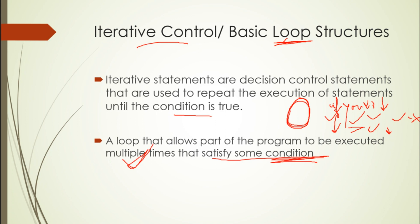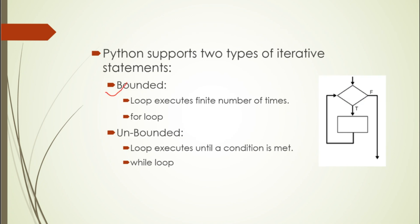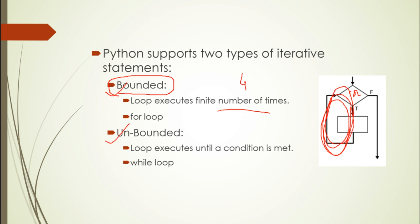There are two types of iterative statements: bounded and unbounded. In the case of bounded, we know how many times the statements will be repeated — for example, if the condition is true, we repeat it four times, a finite number of times. This is a bounded iterative statement, and it can be executed using the for loop in Python. In the case of unbounded, we cannot define how many times the loop runs while the condition is true — this can be done in Python using a while loop.